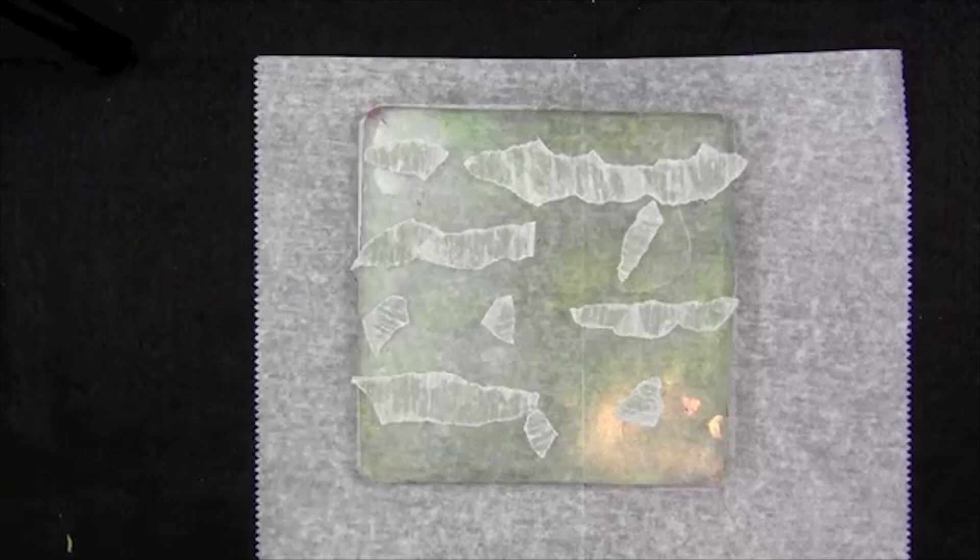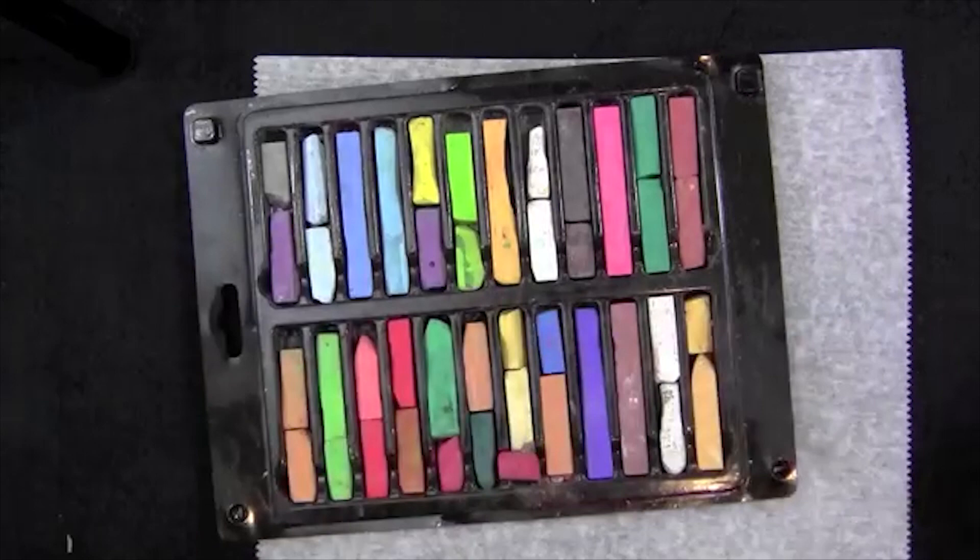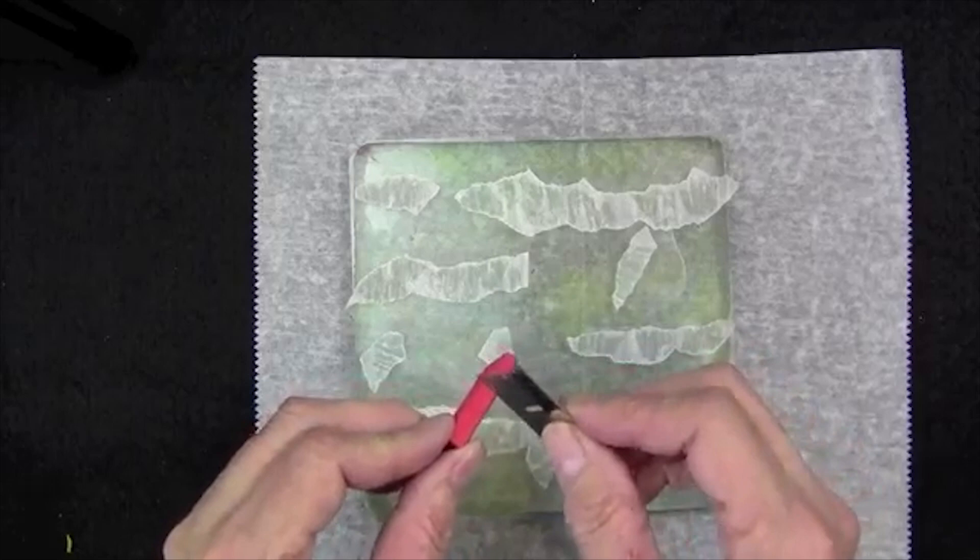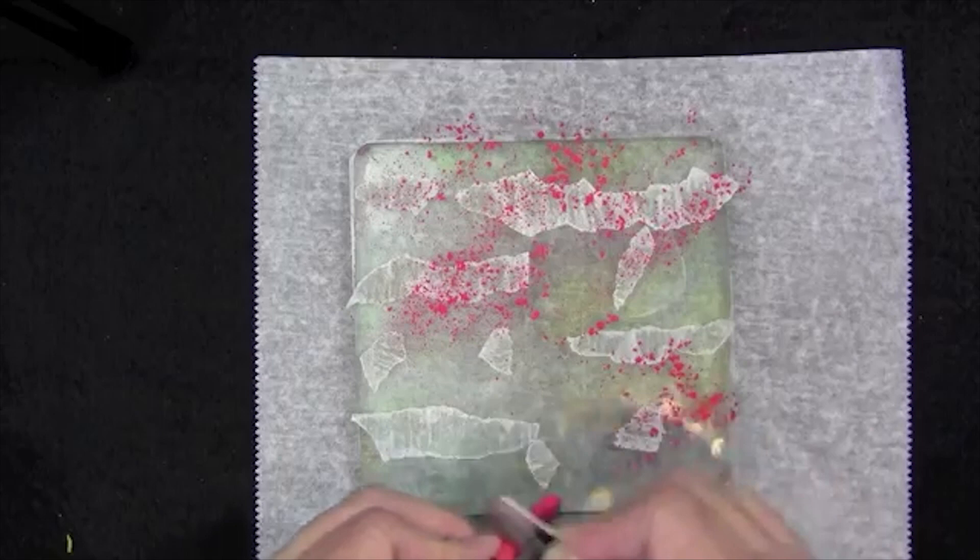The next thing I'm going to do is take this really cheap set of pastels from one of the big box stores. I've got a single edge razor blade, so I'm taking the orange pastel and the razor blade and I'm going to just put some pastel powder onto the plate.